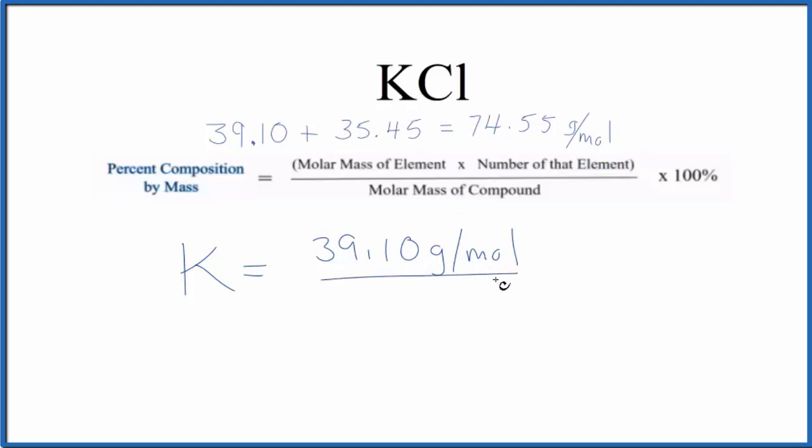So we don't really need to do anything here. We can divide that by the molar mass of the compound, multiply by 100, and you'll note that grams per mole on the top and bottom cancels out.